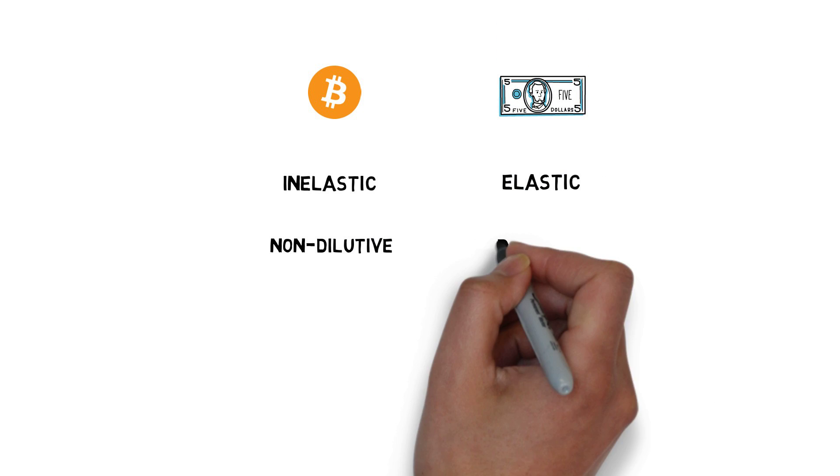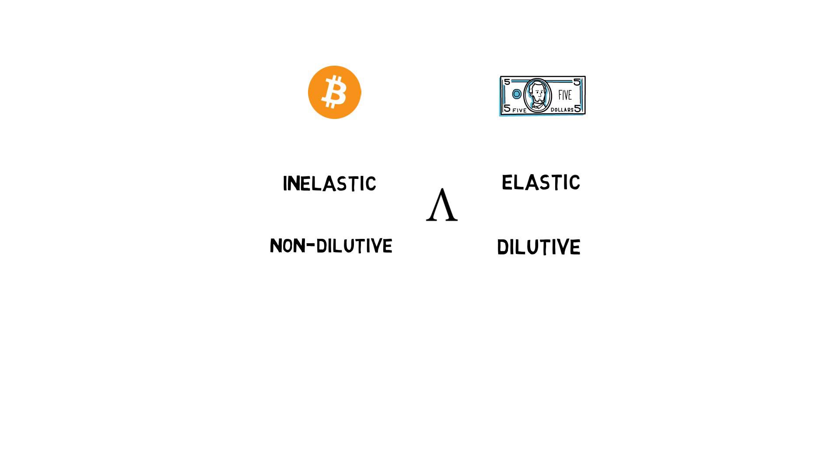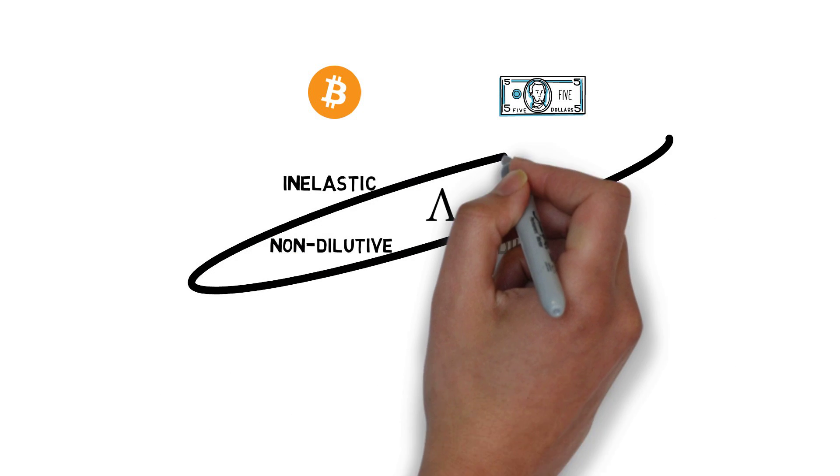Bitcoin is inelastic and non-dilutive. Fiat money, such as the US dollar, is elastic but dilutive. Ampleforth is both elastic and non-dilutive.